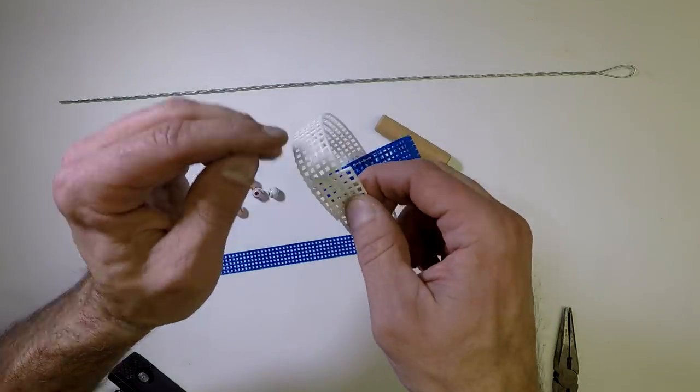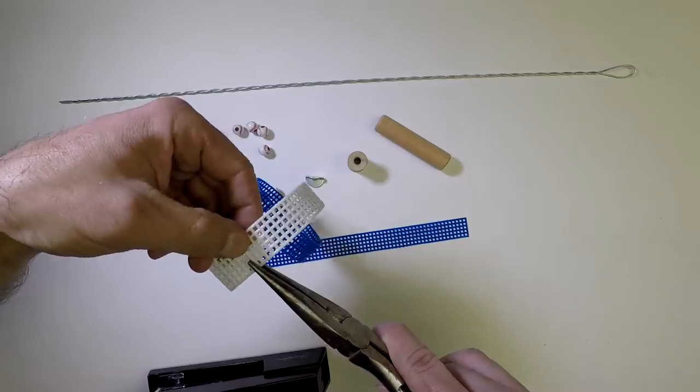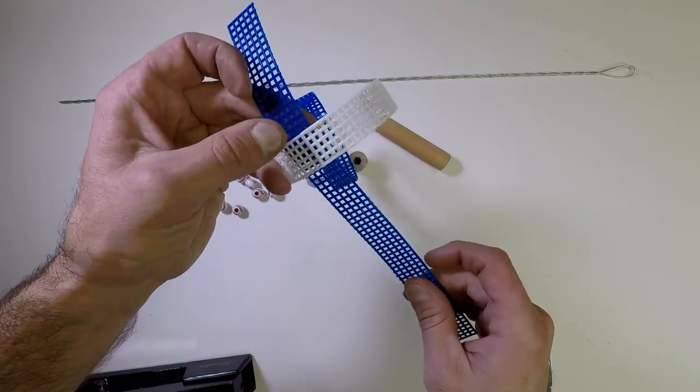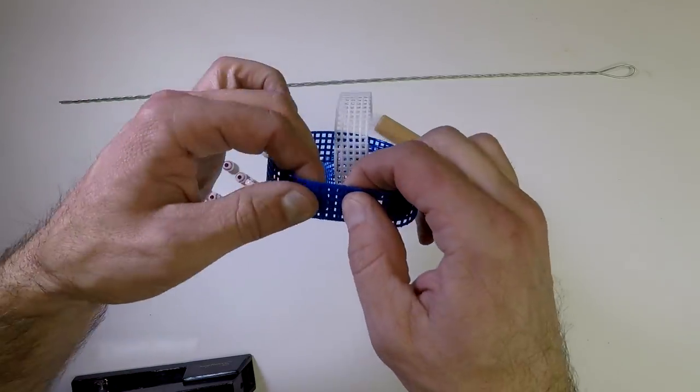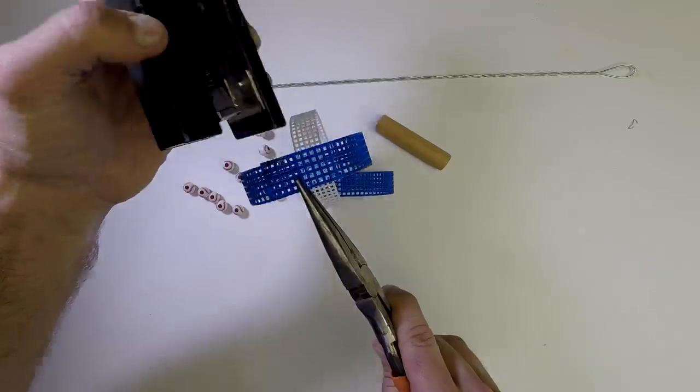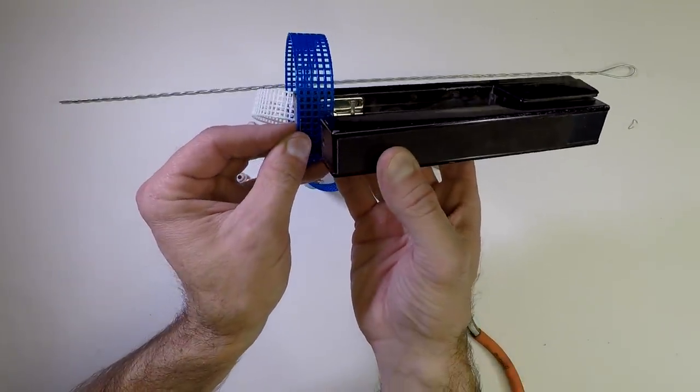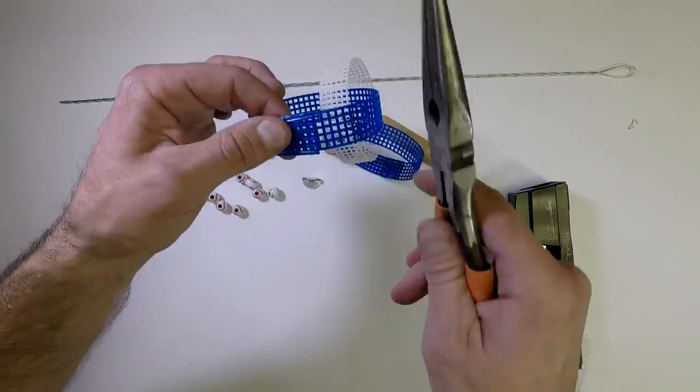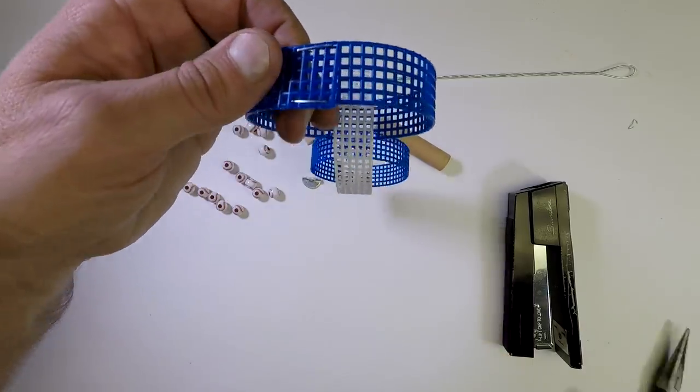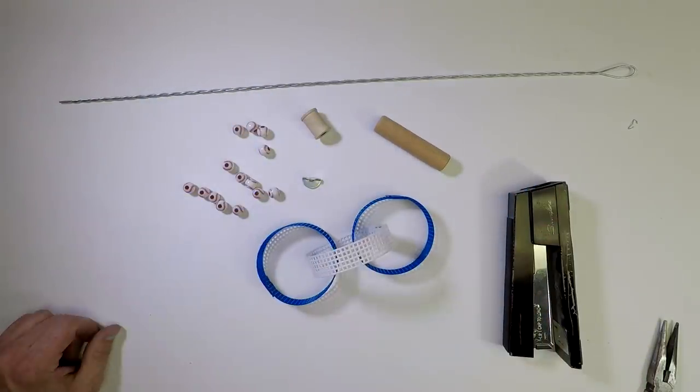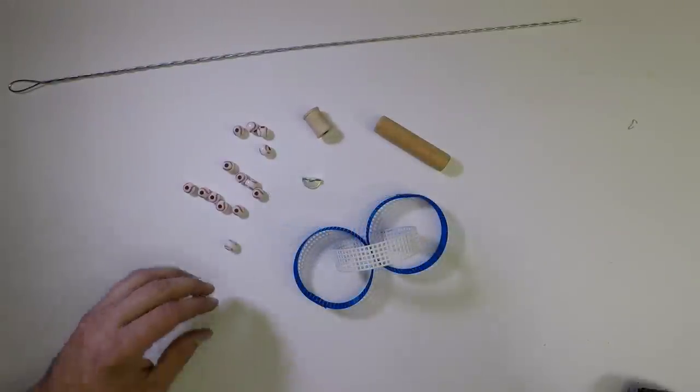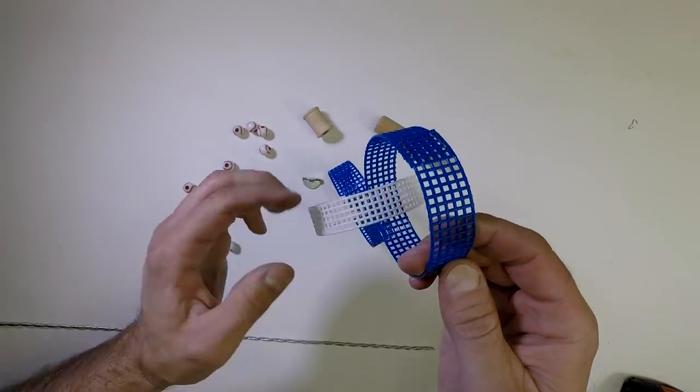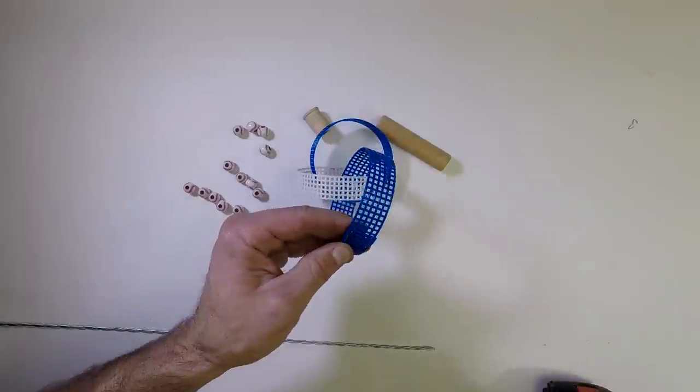Pick your second one. We're going to do the same thing. Now, we should end up with something that looks like that. Now, before we assemble, if you notice, these holes are too small for our wire. So, what we're going to have to do is enlarge it with the drill.